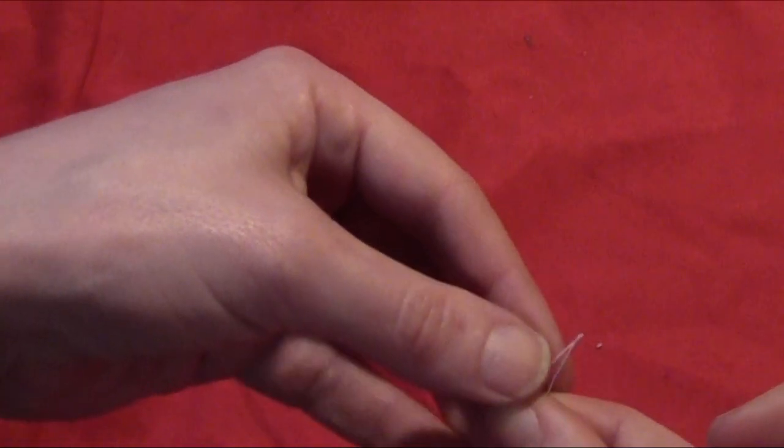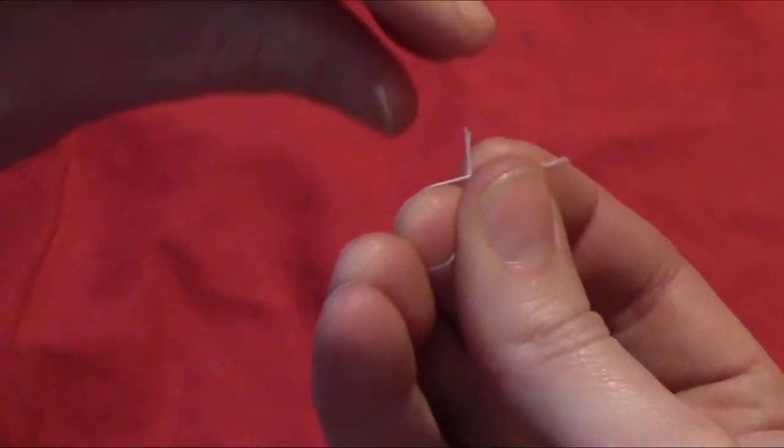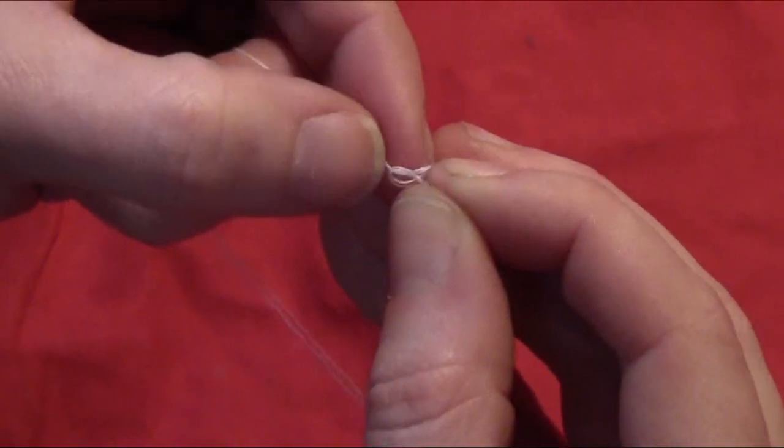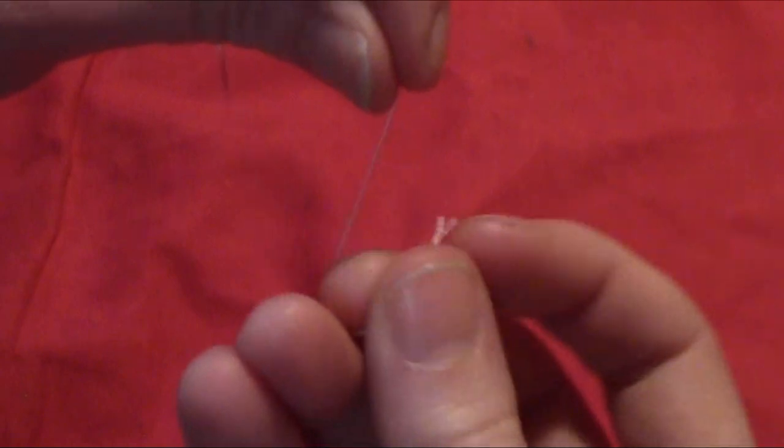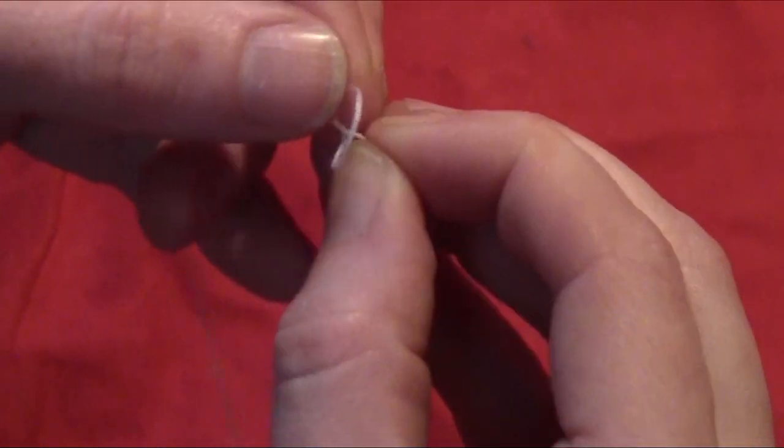Then you'll just take the ends of the thread and tie them into a knot. Basically just wrap it around your finger and make a little knot. You can tie a second one right over that knot if you want it to be a little bigger, a little easier to see.